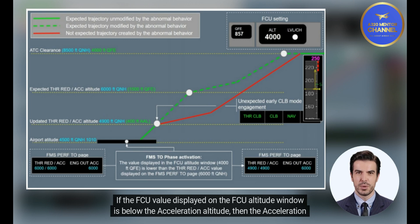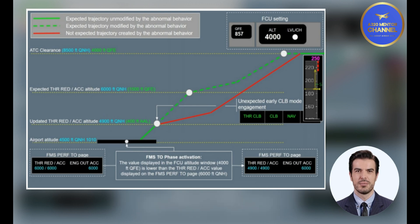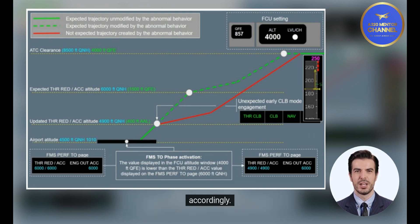If the FCU value displayed on the FCU altitude window is below the acceleration altitude, then the acceleration altitude is set to the maximum value between the FCU value and the airport altitude plus 400 feet. If the thrust reduction/acceleration altitudes are updated, the FMS PERF takeoff page is updated accordingly.